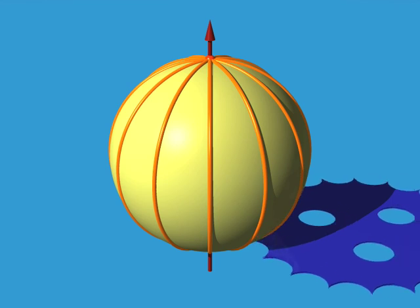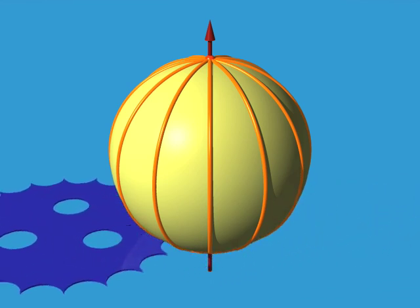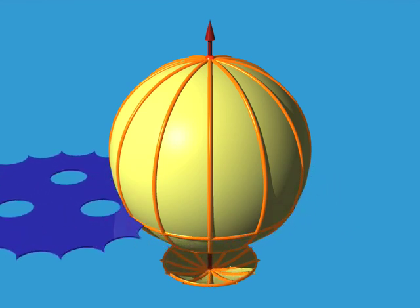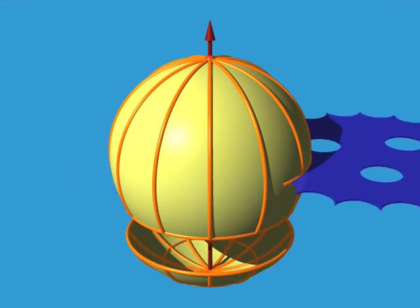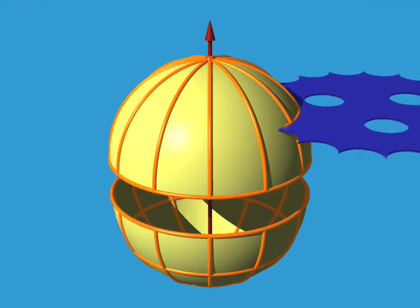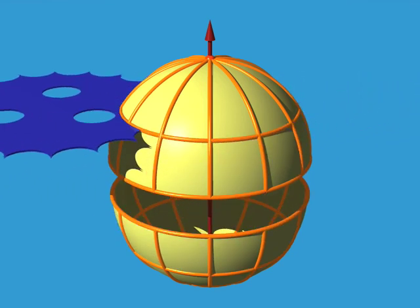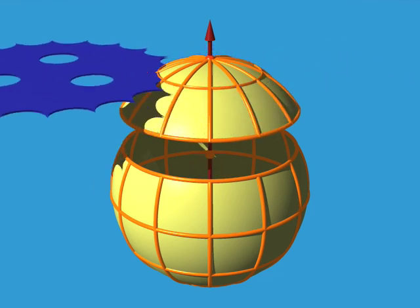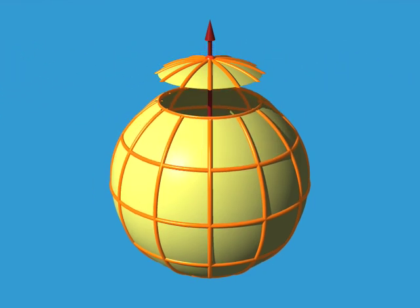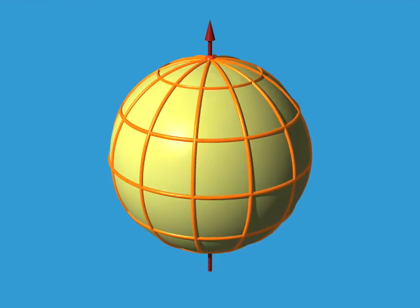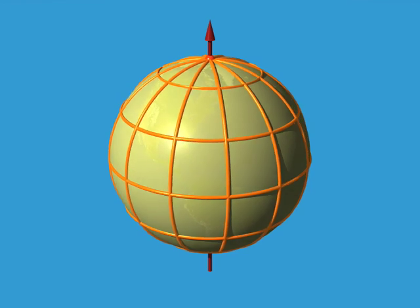And now if we slice the sphere up along a plane at right angles to this axis, we get a bunch of circles called parallels. So now our sphere is covered by two networks of curves, the meridians and the parallels.